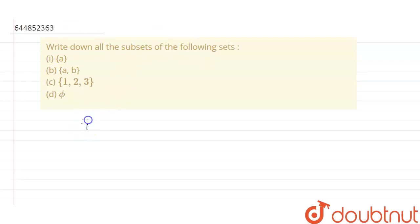So our first part is we have to write a subset of A, so it will be phi and A.